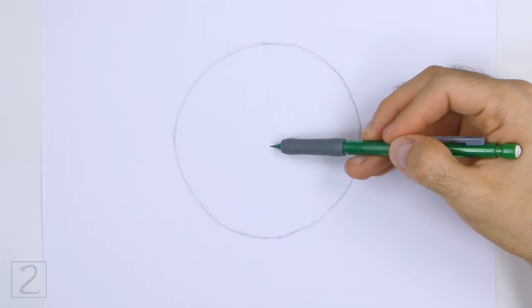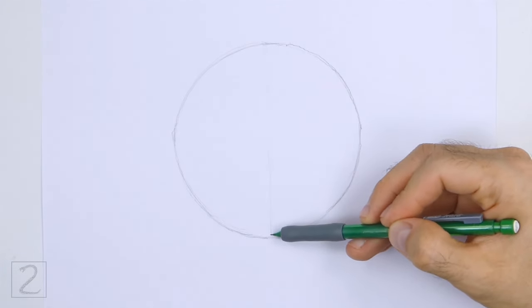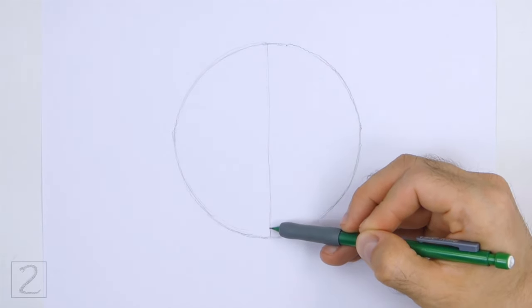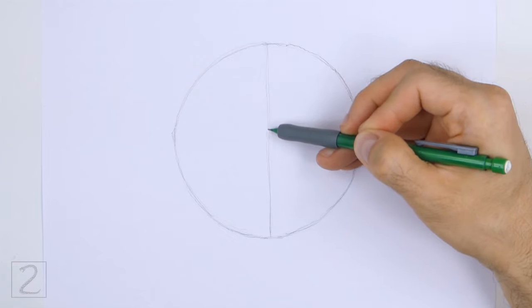Inside the circle, draw a vertical line to split the shape in half. This is a construction guide that will help you place the facial features later on.